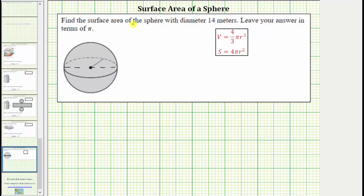And because the radius is a distance from the center to the surface of the sphere, the radius is half of the diameter. So if the diameter is given as 14 meters, then the radius is 7 meters.